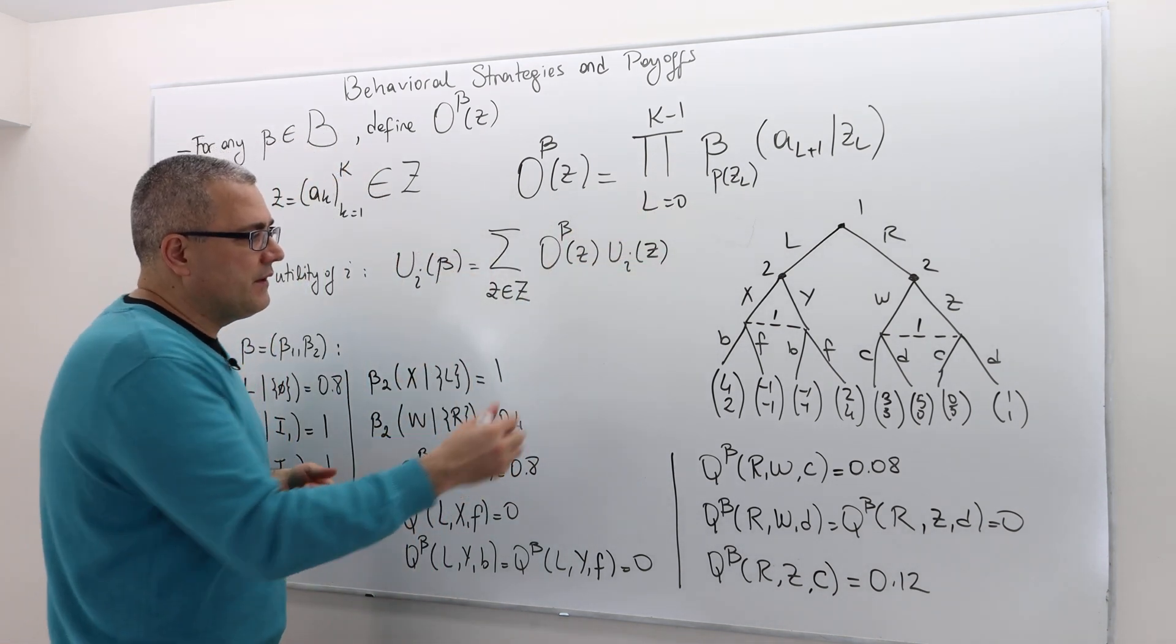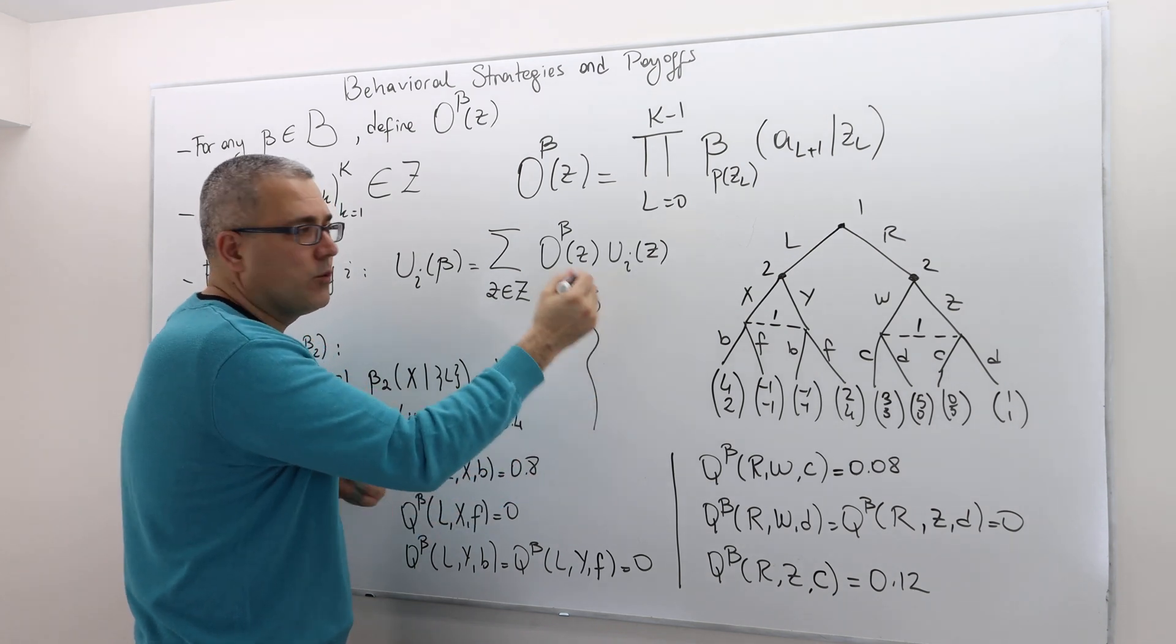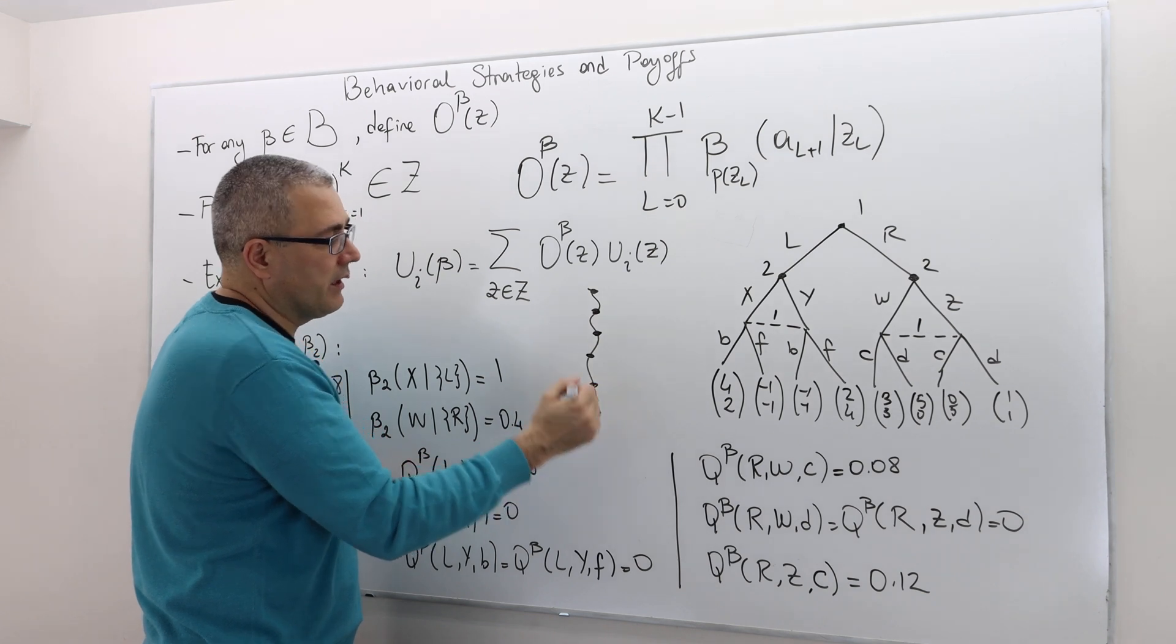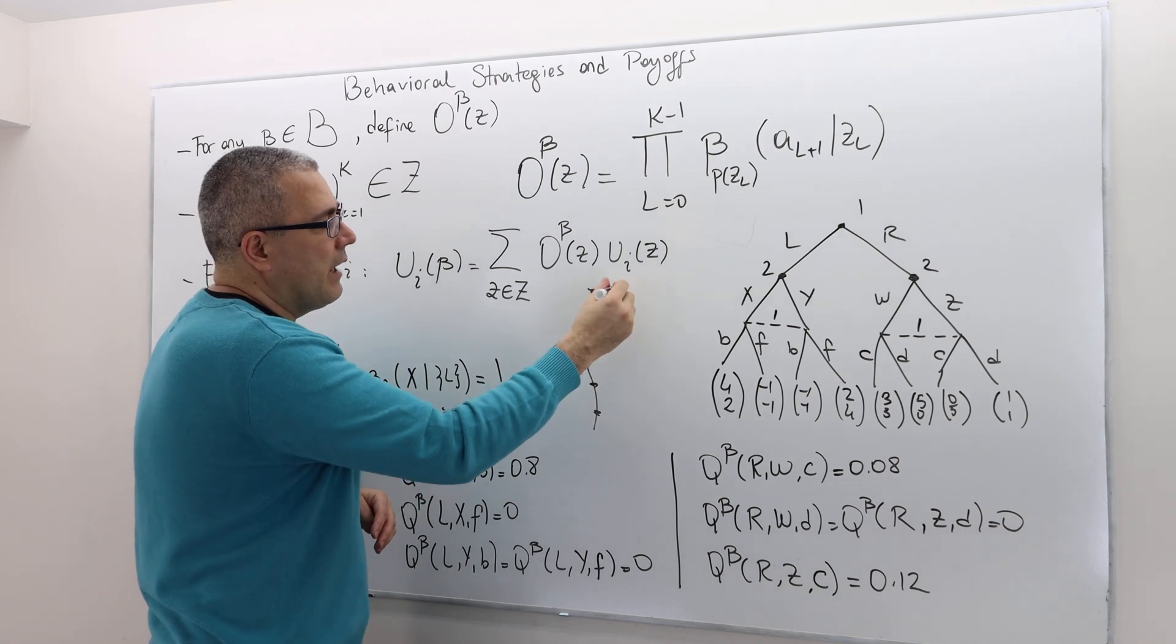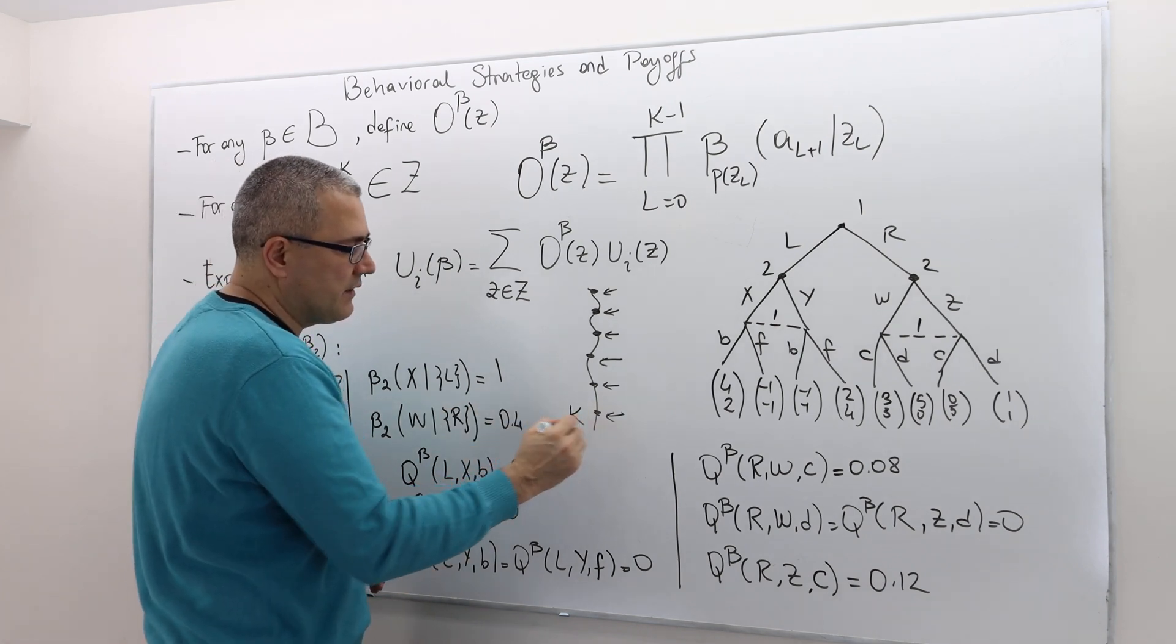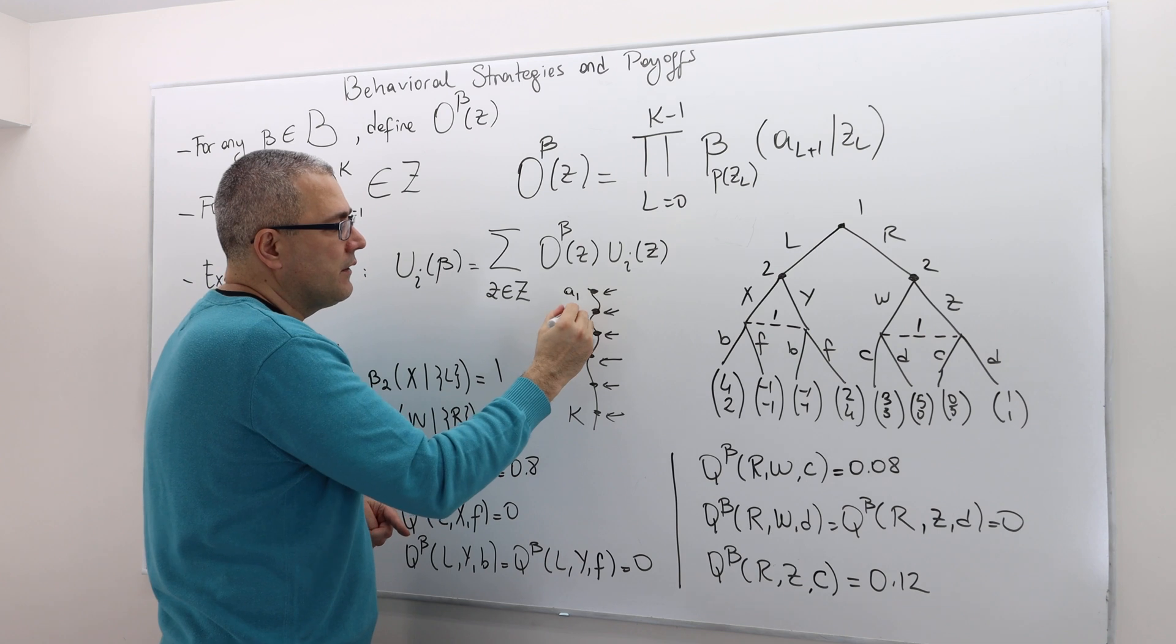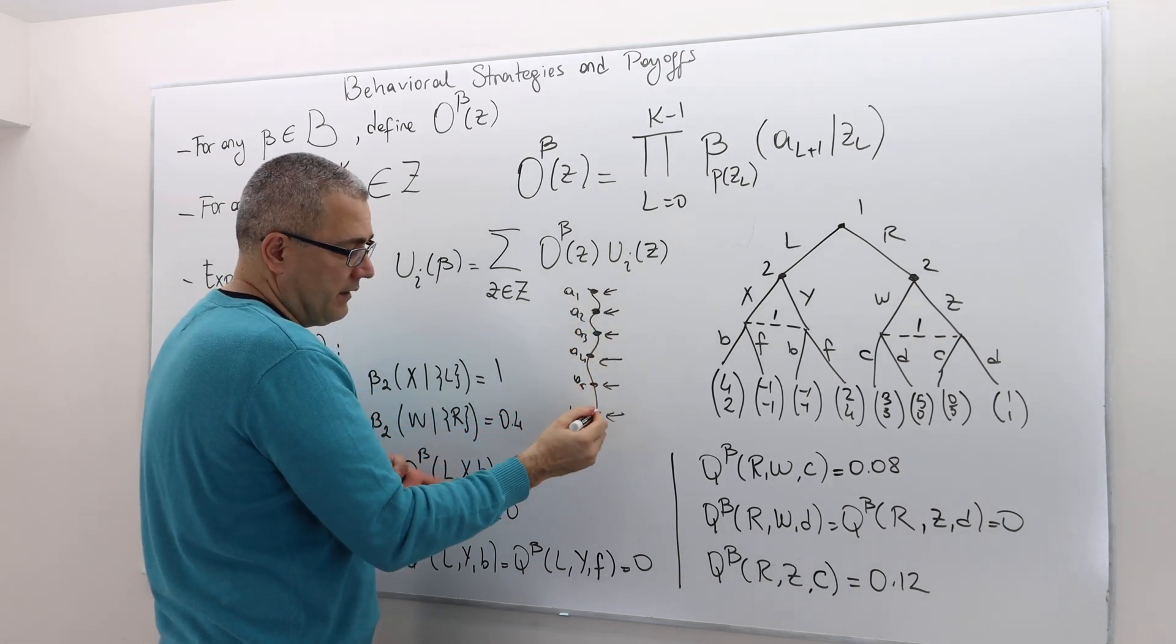If we have a history where player 1, player 2, player 1 again, maybe player 3, if these are the timings of the actions in this history, and then this is the end, this is k. What happens is this is a1, this is a2, a3, a4, a5, and this is a k.